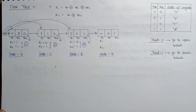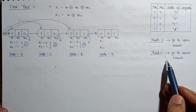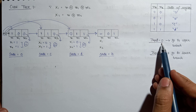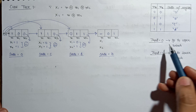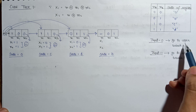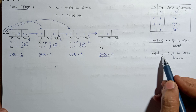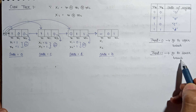Now let us plot the code tree. Before plotting, note the two rules: if the input value m is 0, we go to the upper branch; and if the value of m is 1, we go to the lower branch.